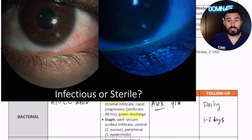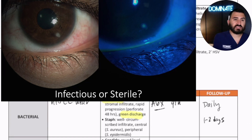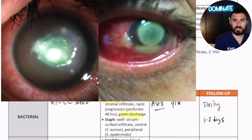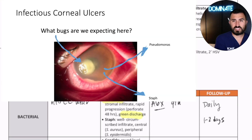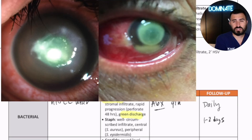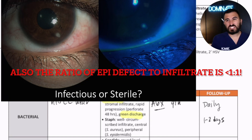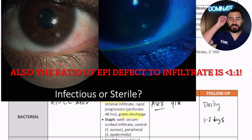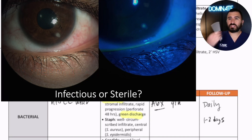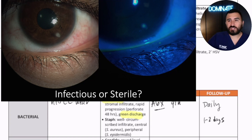I would say this is infectious, right? But you see the difference here — there's not a lot of injection in this picture compared to over here. Look at both of those eyes. Look at how much injection — just a little bit, right? And this is going to be a case of where it's borderline, and sometimes you're not going to know if this is sterile or infectious.